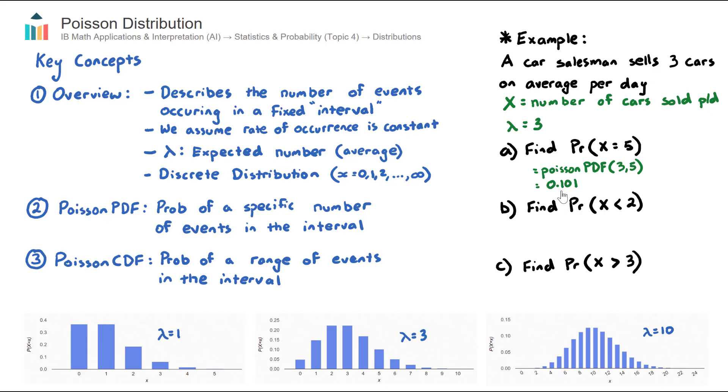Now what does this number mean? This is a probability, 0.101, so 10.1%. That is the probability that this salesman sells exactly five cars, given that his average per day is three.